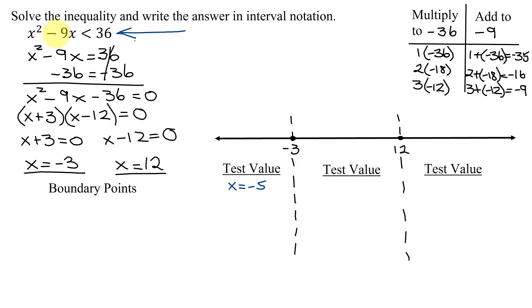So I'm going to plug this value into the very original inequality. So I have x squared minus 9x. So I'm going to get negative 5 all squared minus 9 times negative 5. Is that less than positive 36? Negative 5 all squared is positive 25. Negative 9 times negative 5 is positive 45. Is that less than 36? 25 plus 45 is 70. Is 70 less than 36? That is a false statement. So I do not want this region here.